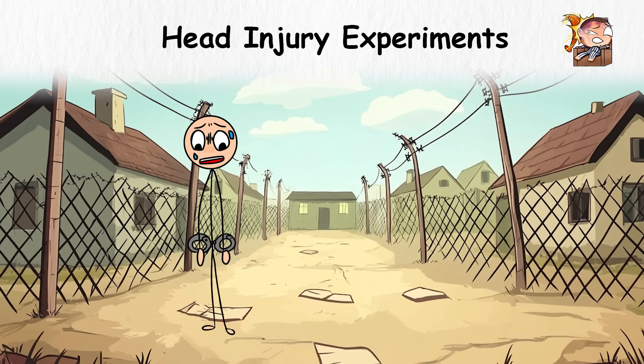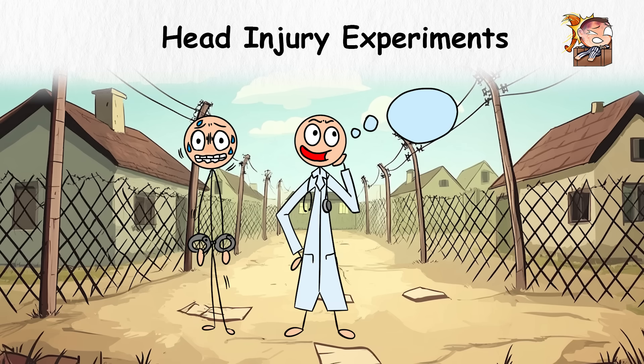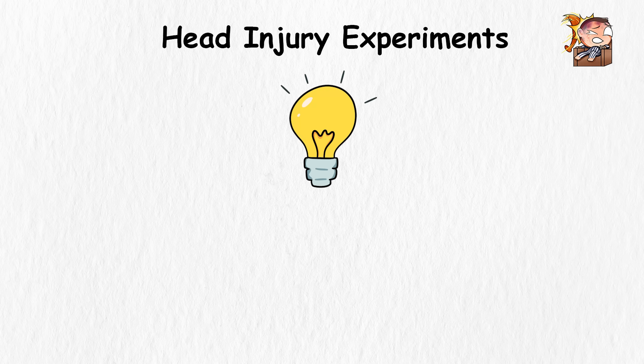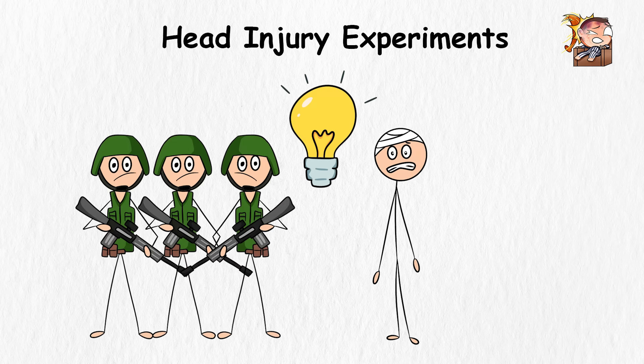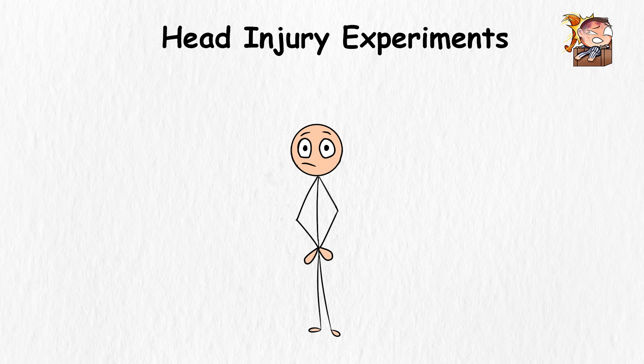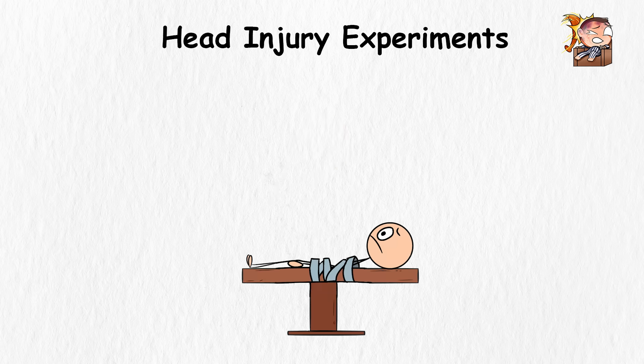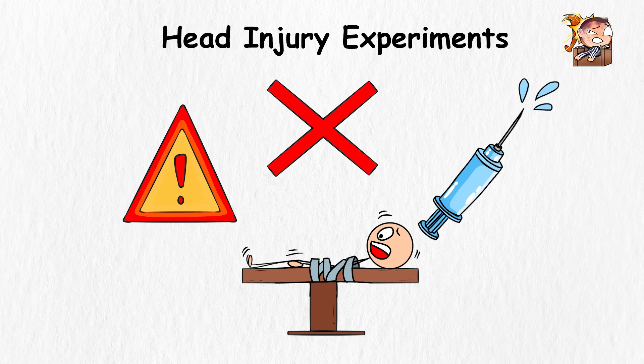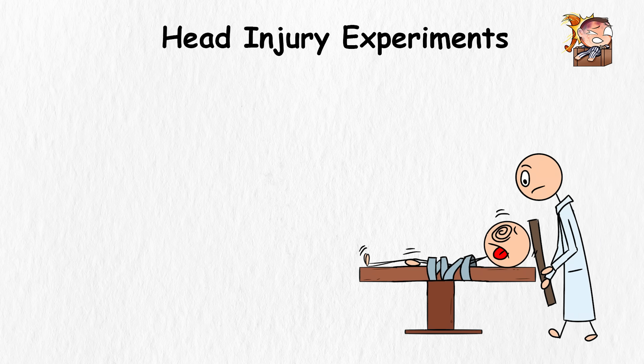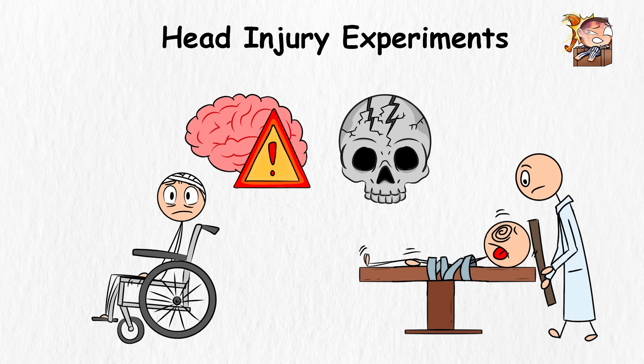Head Injury Experiments. Let's say you're a prisoner at the Dachau concentration camp, and as if the daily horrors of life weren't enough, the camp's so-called doctors decide they needed to find out what happens when you take a really, really hard hit to the head. Their bright idea? Study brain injuries to figure out how to help soldiers who might suffer from them in combat. Sounds almost noble, until you realize they're about to turn you into a human crash test dummy. They'd strap you down nice and tight so you can't move an inch, then without so much as a warning or an ounce of anesthesia, they'd whack your head with a large stick or blunt object. The impact would fracture your skull and cause your brain to start bleeding, which would most likely cause brain damage and a stroke.